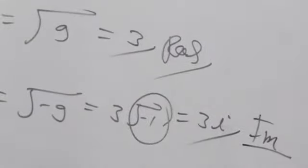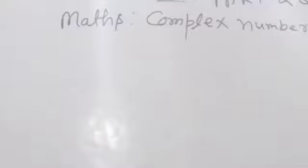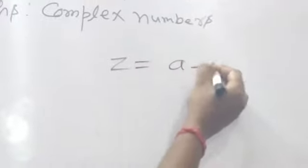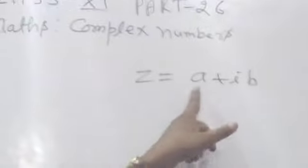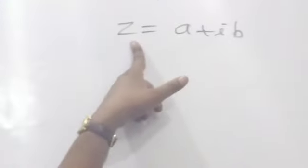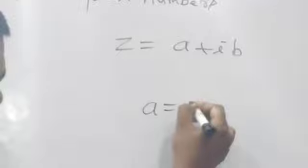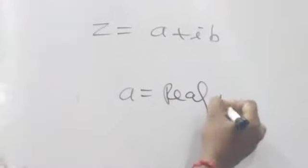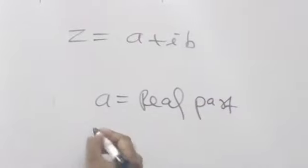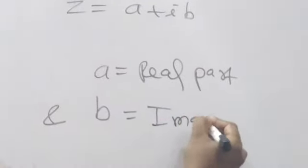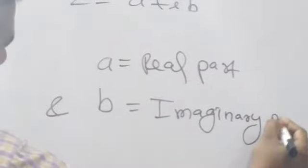And 1 with 3 is the real number. Now, if Z = A + iB, where Z is the complex number. Remember, in this complex number, A is the real part and B is the imaginary part.